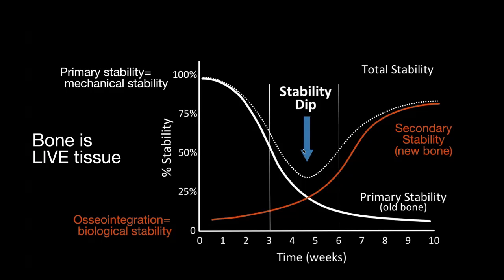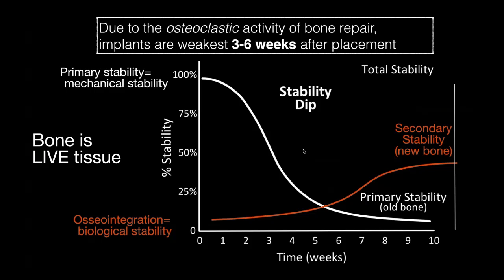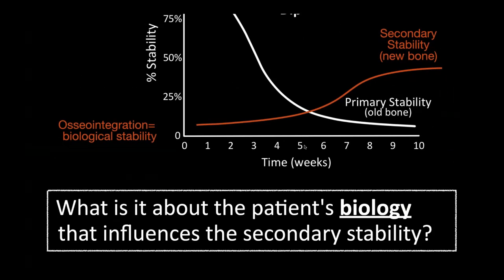This problem is called the stability dip. When you place an implant you get primary mechanical stability, but osteoclastic activity causes it to drop. Simultaneously, osseointegration provides biologic stability that builds bone back up. The dip between mechanical stability loss and biologic stability gain happens between three to six weeks — it's just what the body does. What's really important is that the patient's biology influences secondary stability more than the implant surface itself.